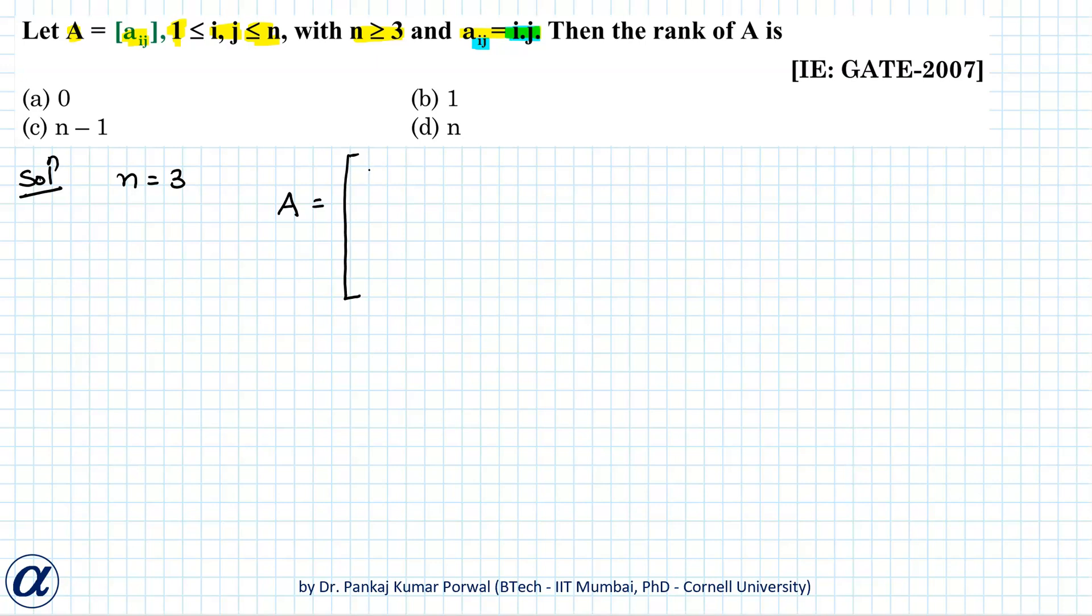So our matrix will be 1 times 1, 1 times 2, 1 times 3, 2 times 1, 2 times 2, 2 times 3, 3 times 1, 3 times 2, and 3 times 3.